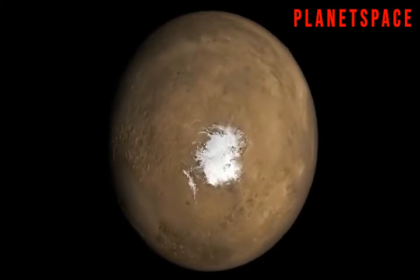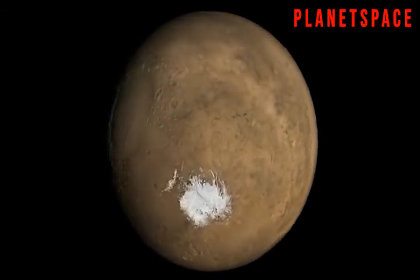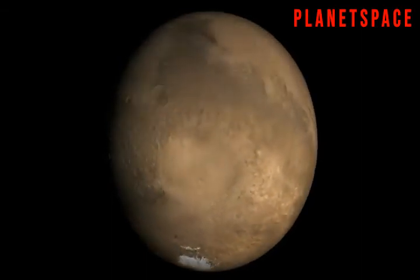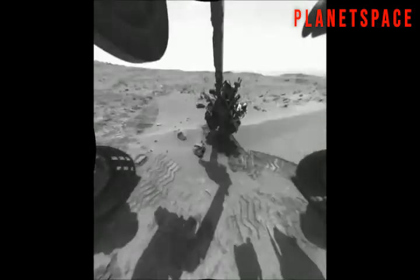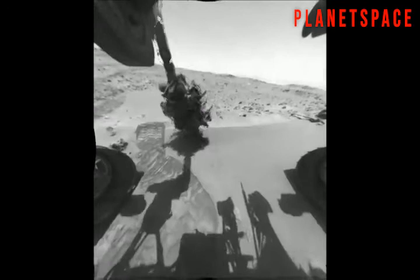Scientists are very interested in Mars because they think that people could live there with the help of some special equipment. Rockets and probes have already been sent there to gain more information about the planet. Right now, there are two special robots exploring the surface of Mars, sending information back to Earth.